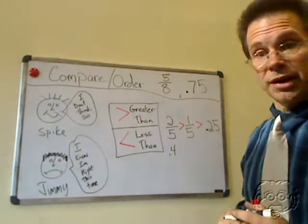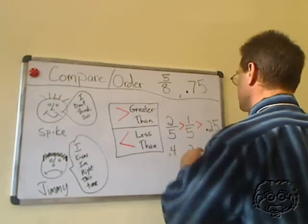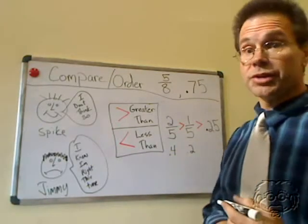One-fifth, one divided by five, is 0.2. So far, Jimmy's doing pretty good.